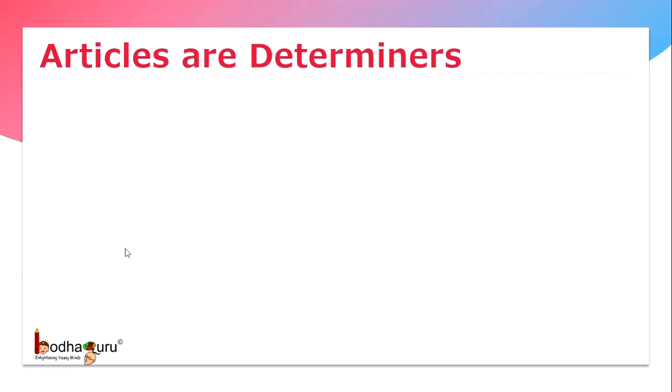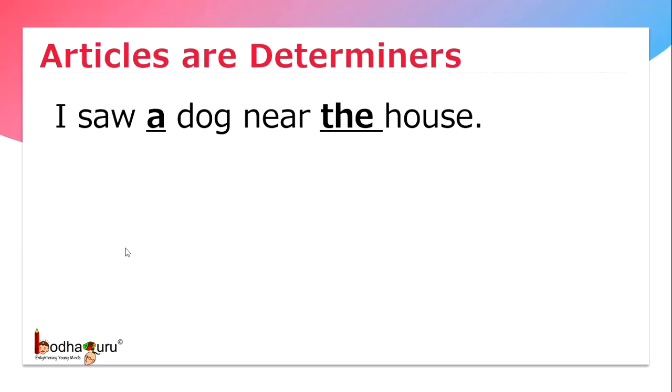As we saw in the examples, articles are determiners. I saw a dog near the house. Here, 'a' and 'the' are articles.